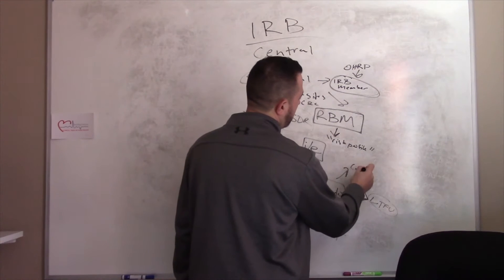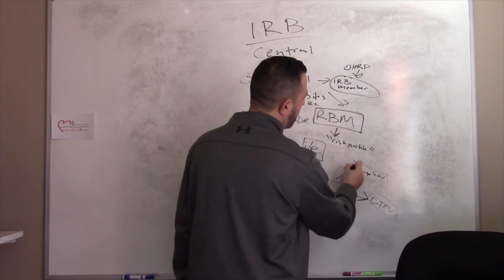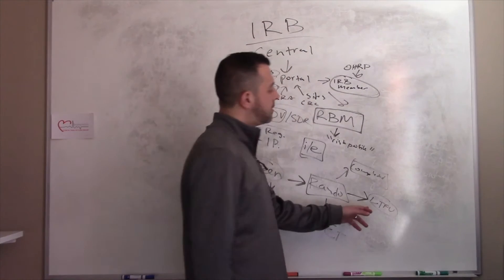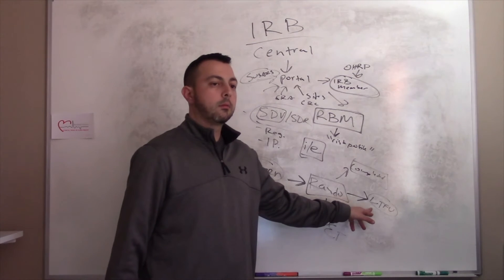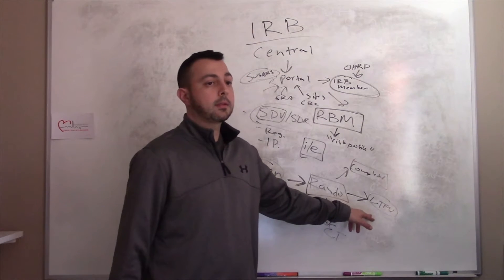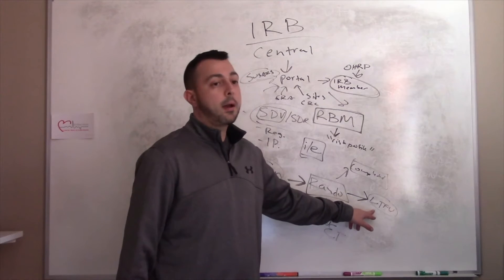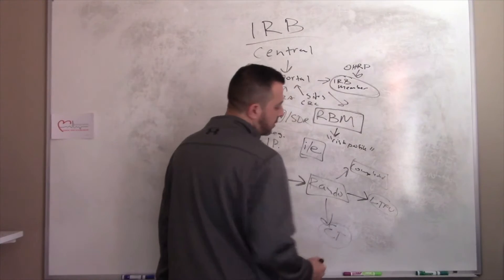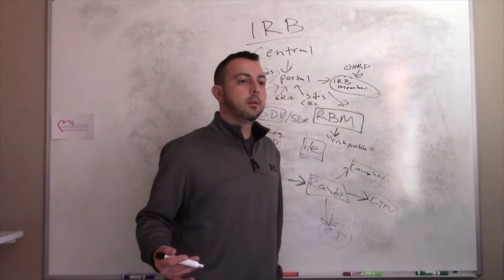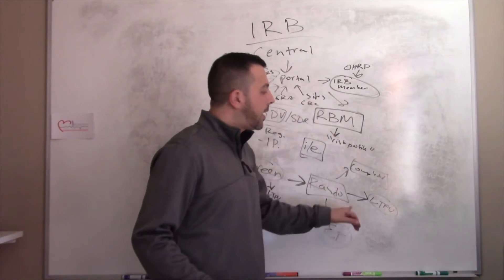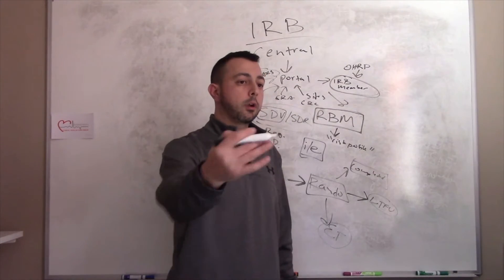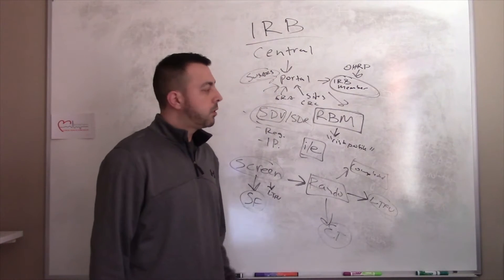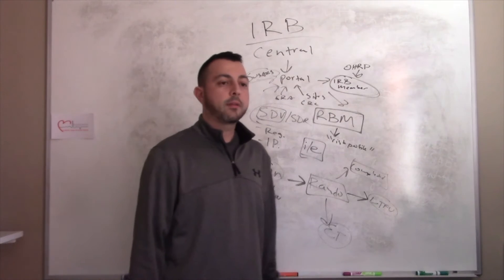Once randomized, a patient can be lost to follow-up — meaning you never hear from them again — or they can early terminate or complete the visit. The process for loss to follow-up is three phone calls and a certified letter. You need the IP back — that's the most important thing. If you can reach the subject, try to convince them to do an early termination visit just for safety assessments.